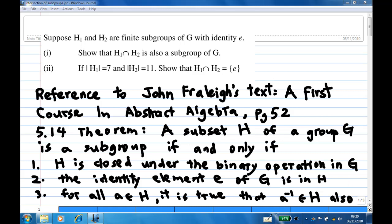Suppose H1 and H2 are finite subgroups of G with identity element e. First, we want to show that the intersection of H1 and H2 is also a subgroup of G.